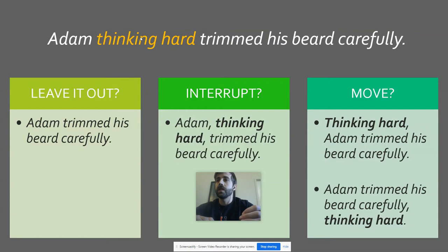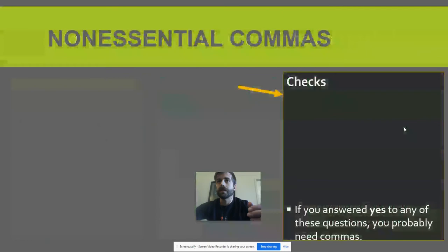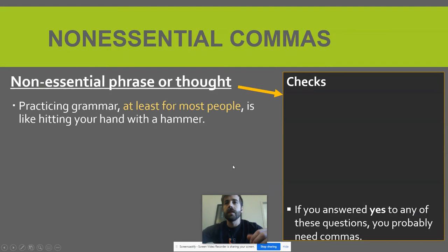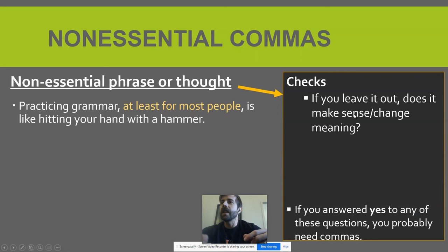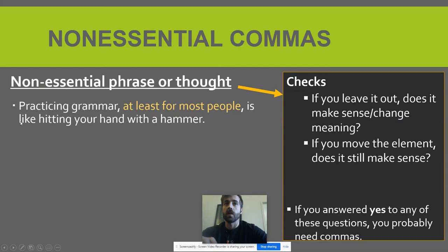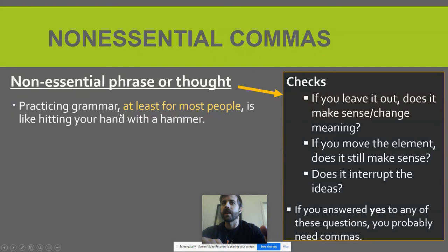Another indicator: if you can move the phrase around and nothing changes, it's non-essential. 'Thinking hard, Adam trimmed his beard carefully' — it's basically the same sentence. Still going to separate that off with commas. Here's a quick review: 'Practicing grammar, at least for most people, is like hitting your hand with a hammer.' If I leave out 'at least for most people,' does it still make sense? 'Practicing grammar is like hitting your hand with a hammer' — totally makes sense. The meaning doesn't change. And if I move the phrase to the front, it's still the same sentence. Feeling like it interrupts your ideas is your first indicator to check whether a phrase needs commas.